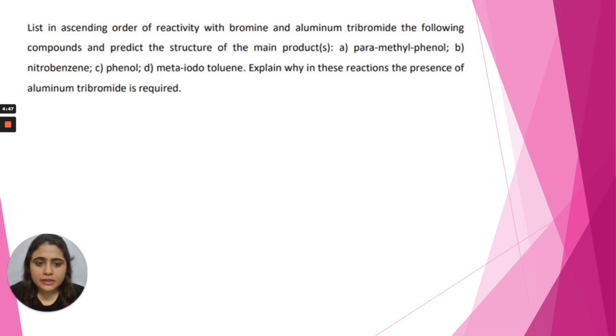Structure A is para-methylphenol. The structure of this first para-methylphenol will be - this is the structure, this is the phenol, and in the para position there is a methyl group. So this is structure 1, para-methylphenol.